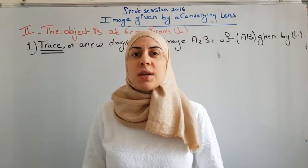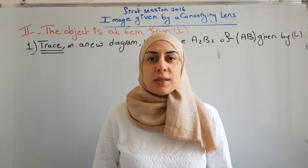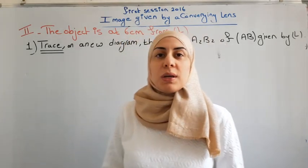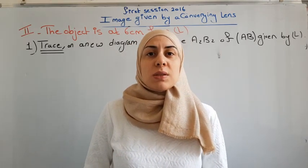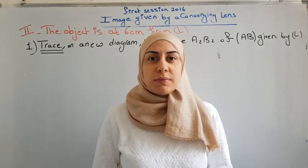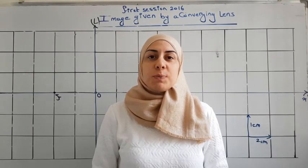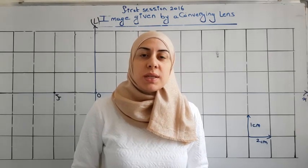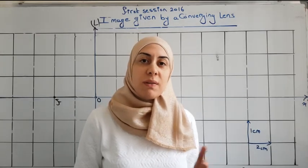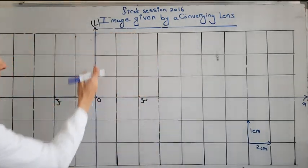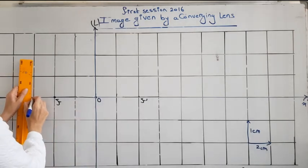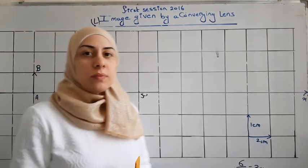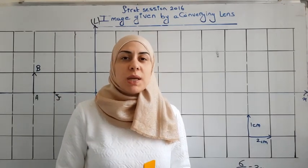In the second part of this exercise, the object is placed at six centimeters from the converging lens — it was previously at two centimeters and has now been moved farther away. In the first question, we want to trace on a new diagram the image A2B2 of AB. Trace means we draw without giving explanations. On the x-axis, each two centimeters are represented by one centimeter, so we draw the object AB at three centimeters graphically from the lens, keeping A on the optical axis and the size of AB at one centimeter.